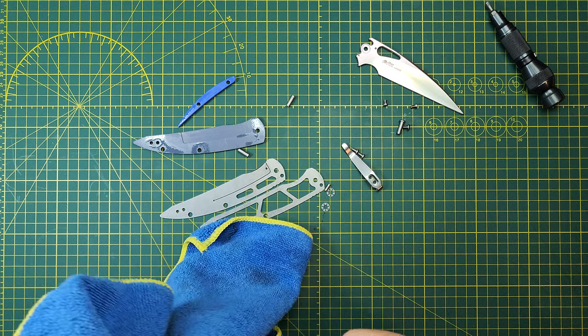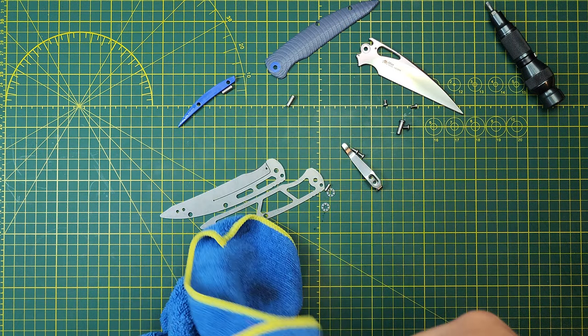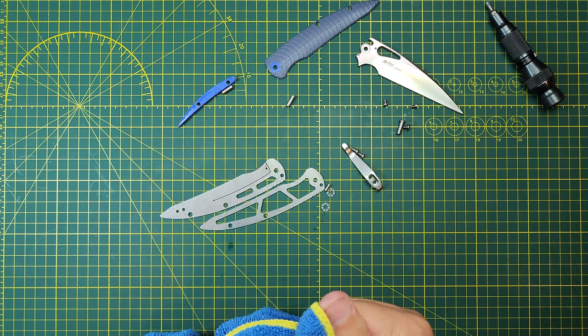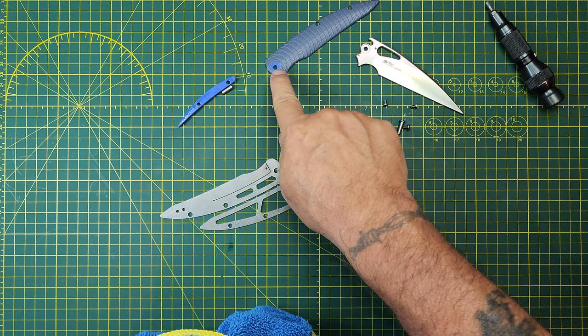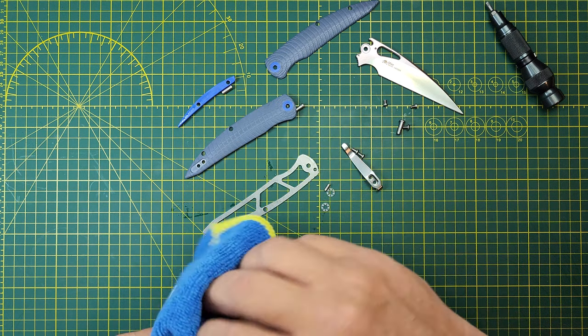G10 scales. I'm saying blue but the more I'm looking at this, like this is blue, these little pieces. But I think that's purple. I think it's a purple knife.